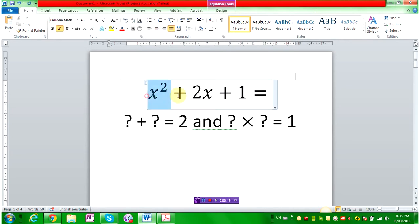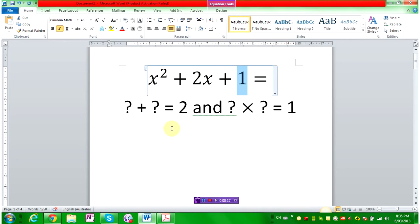So, basically when you're factorizing these equations, you need to find what plus what gives you 2 and what times what gives you 1. And in the small ones, the small numbers, it's quite easy. So, you just find 1. 1 plus 1 equals 2 and 1 times 1 gives you 1. So, you can just factorize it as x plus 1 times x plus 1.